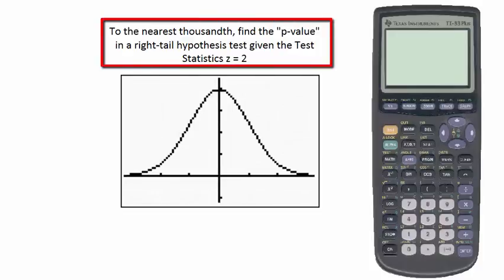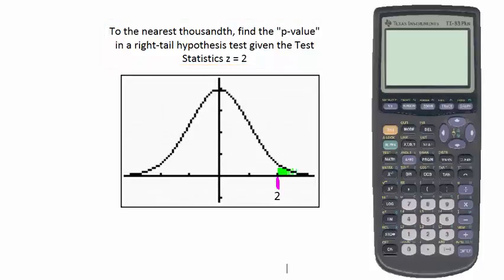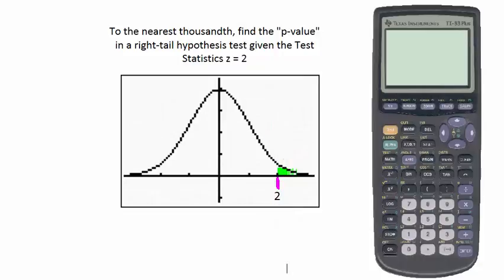In this problem, we're asked to find the p-value in a right-tail hypothesis test given the test statistic z is equal to 2. A z-score of 2 means two standard deviations to the right of the mean, and the p-value is represented by the green area under the normal curve — the area under the curve greater than 2.